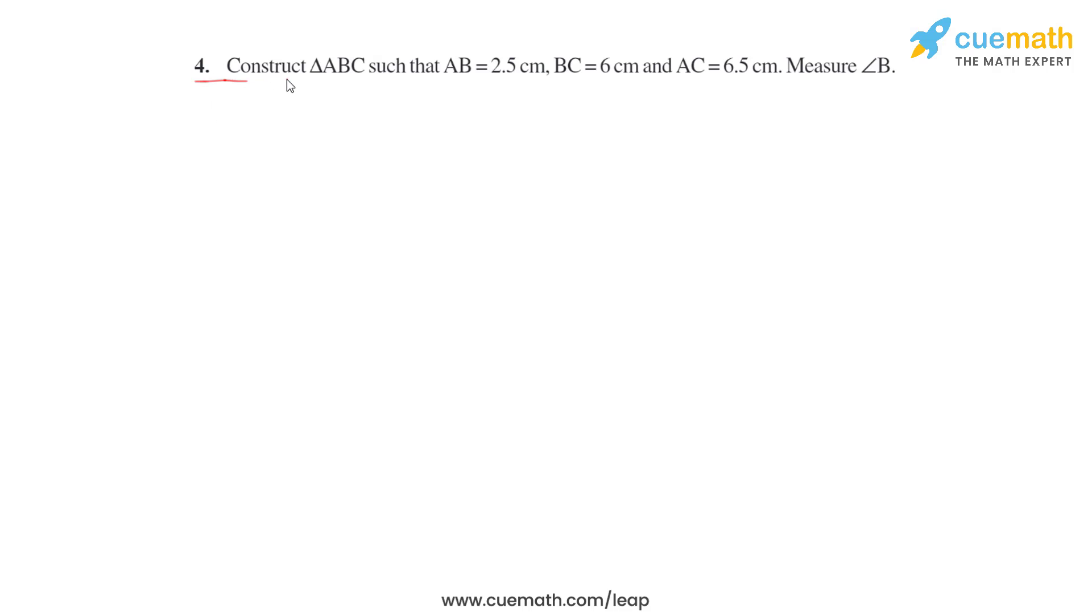Fourth question: Construct triangle ABC such that AB is 2.5 cm, BC is 6 cm, and AC is 6.5 cm. Then measure angle B. So, let's start.